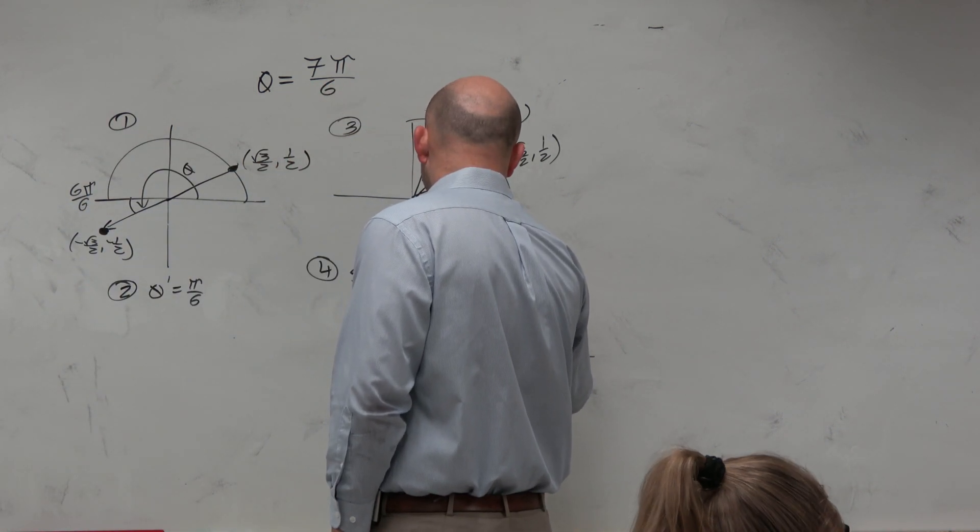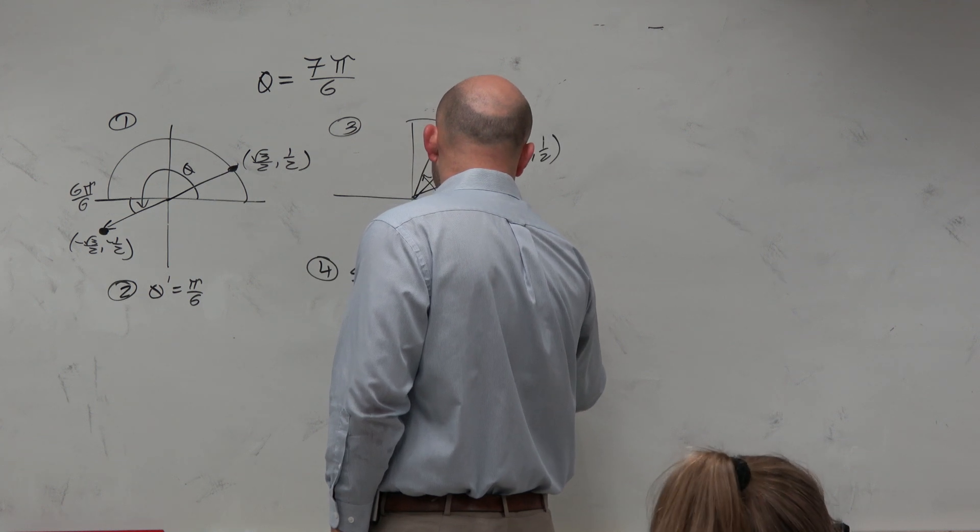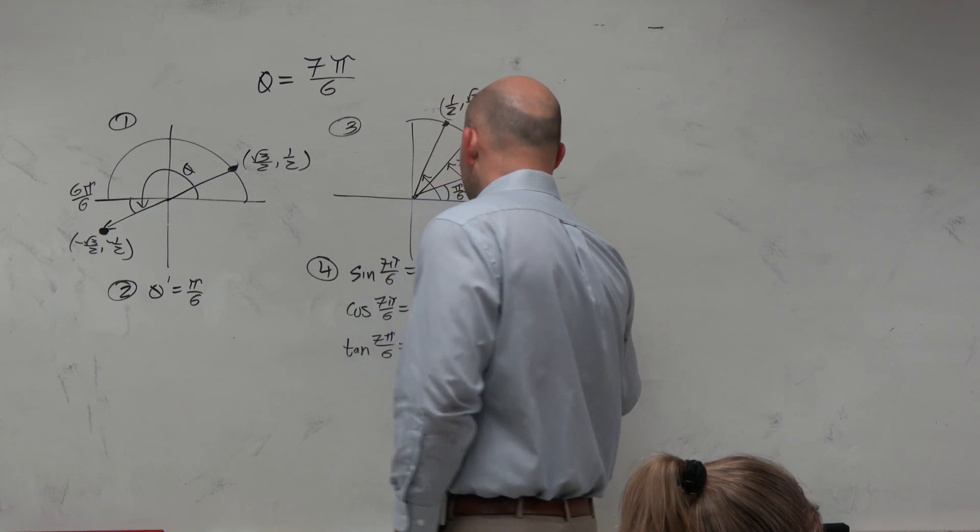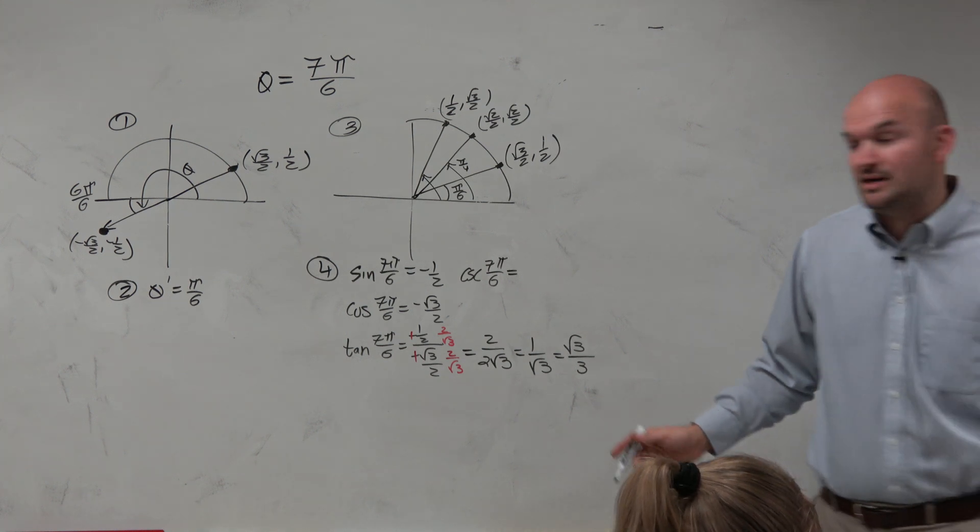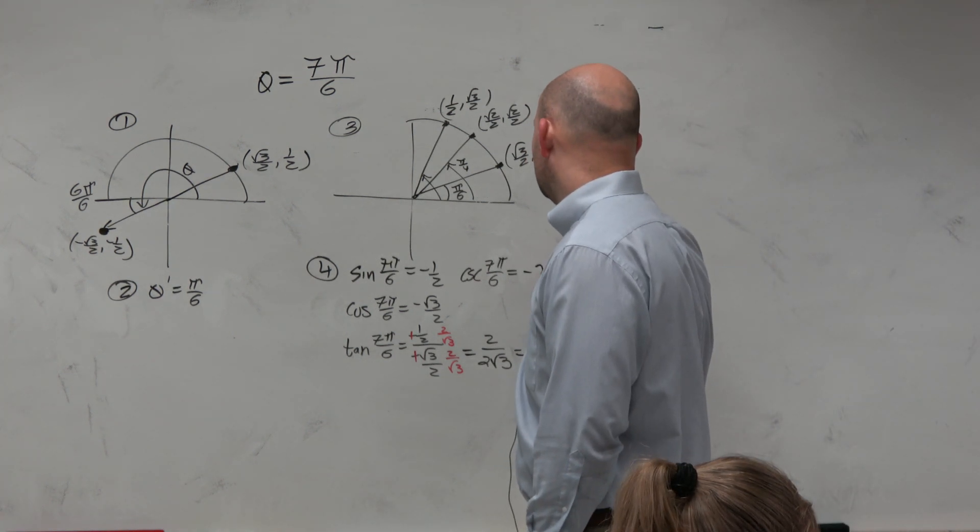So the cosecant of 7 pi over 6 is just the reciprocal of negative 1 half. That's not too bad. That's just going to be negative 2.